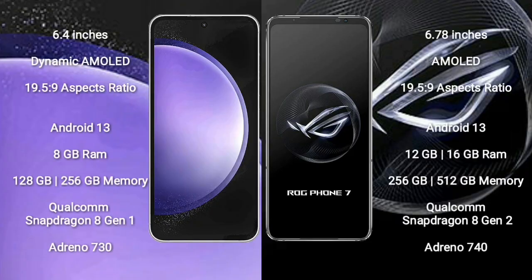Samsung Galaxy S23 FE comes with a 6.4-inch Dynamic AMOLED display and aspect ratio 19.5:9. Asus ROG Phone 7 comes with a 6.78-inch AMOLED display and aspect ratio 19.5:9. Samsung Galaxy S23 FE runs on Android 13. Asus ROG Phone 7 also runs on Android 13.